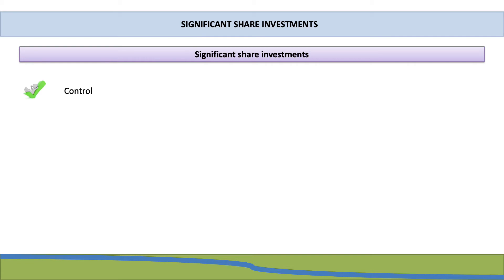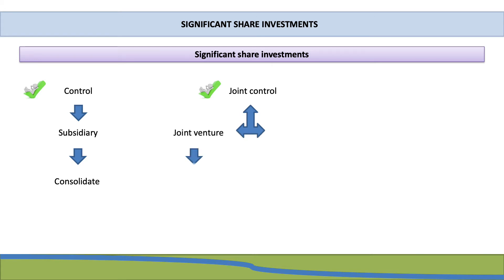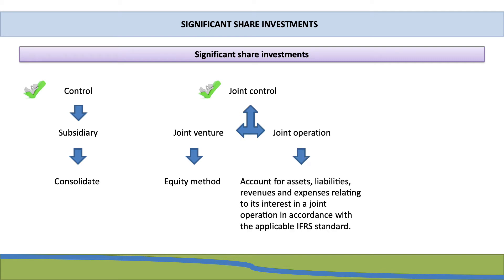The first category is where a company has control over another company — that other company is referred to as a subsidiary — giving a parent-subsidiary relationship, accounted for by consolidating the financial statements. The second is joint control, either as a joint venture accounted for under the equity method, or a joint operation accounted for under the applicable IFRS standards for assets, liabilities, revenue, or expenditure. The third is significant influence, where the investee is called an associate, also accounted for on the equity method.